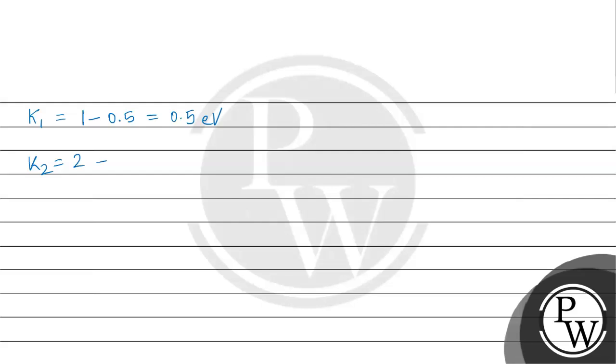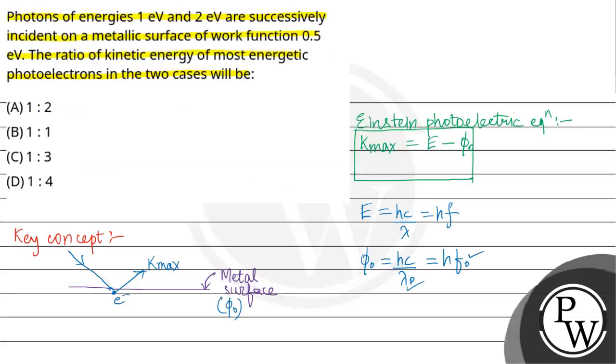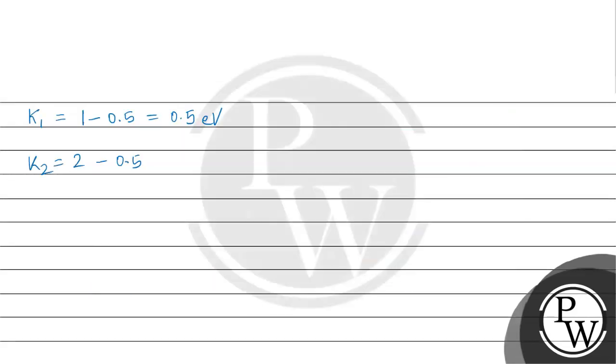In the second case, K2 equals 2 eV minus 0.5 eV, which equals 1.5 eV.